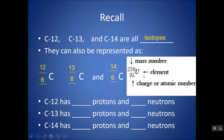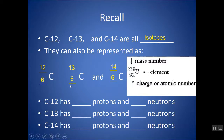Instead of calling it the atomic number, we could also call it the nuclear charge — the charge of the nucleus. There are six protons, each with a plus-one charge. There are also neutrons in the nucleus, but they have no charge. So sometimes we refer to this bottom number as the charge or nuclear charge.